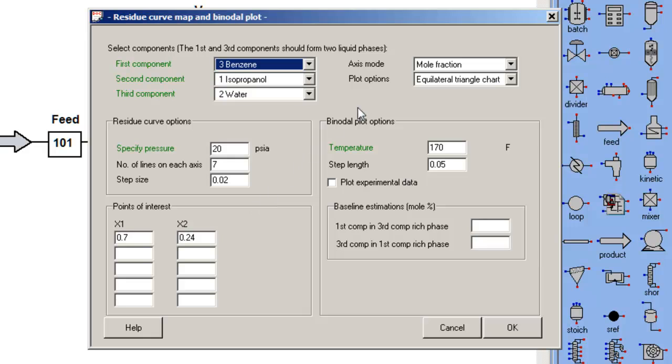I'm going to plot this as mole fraction on an equilateral triangle. Because I know that the benzene isopropanol homogeneous azotrope is at about 170 degrees Fahrenheit at 20 psi, I want to calculate the binodal plot at 170 degrees.